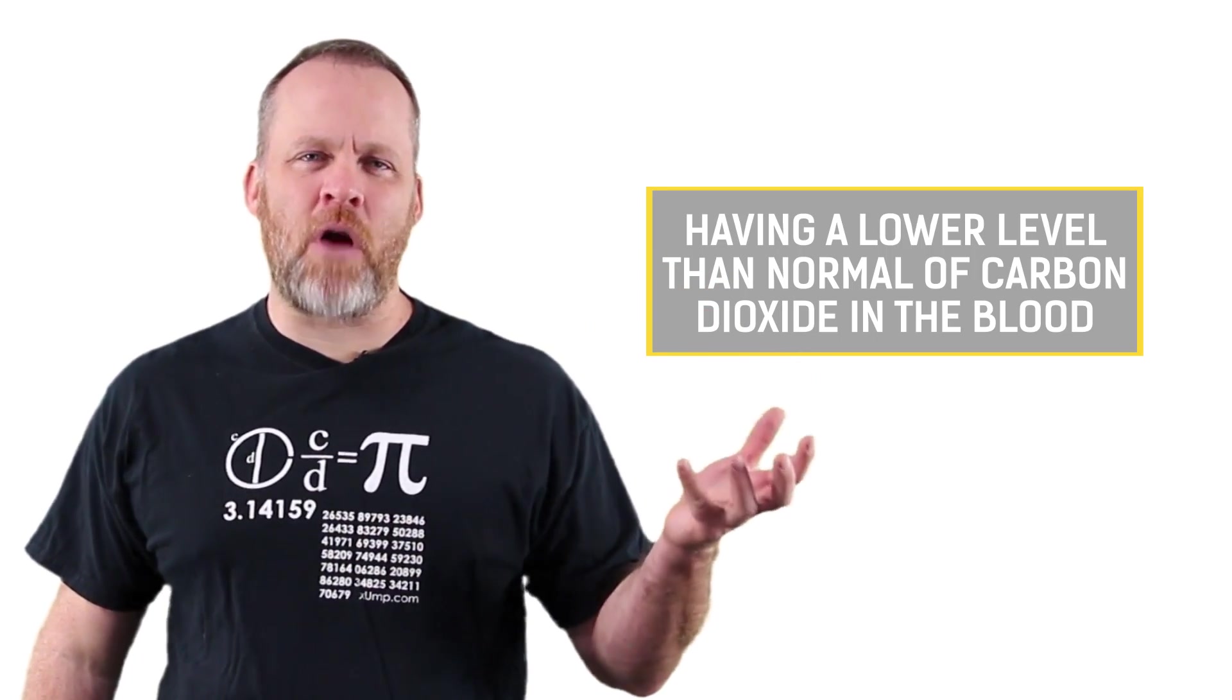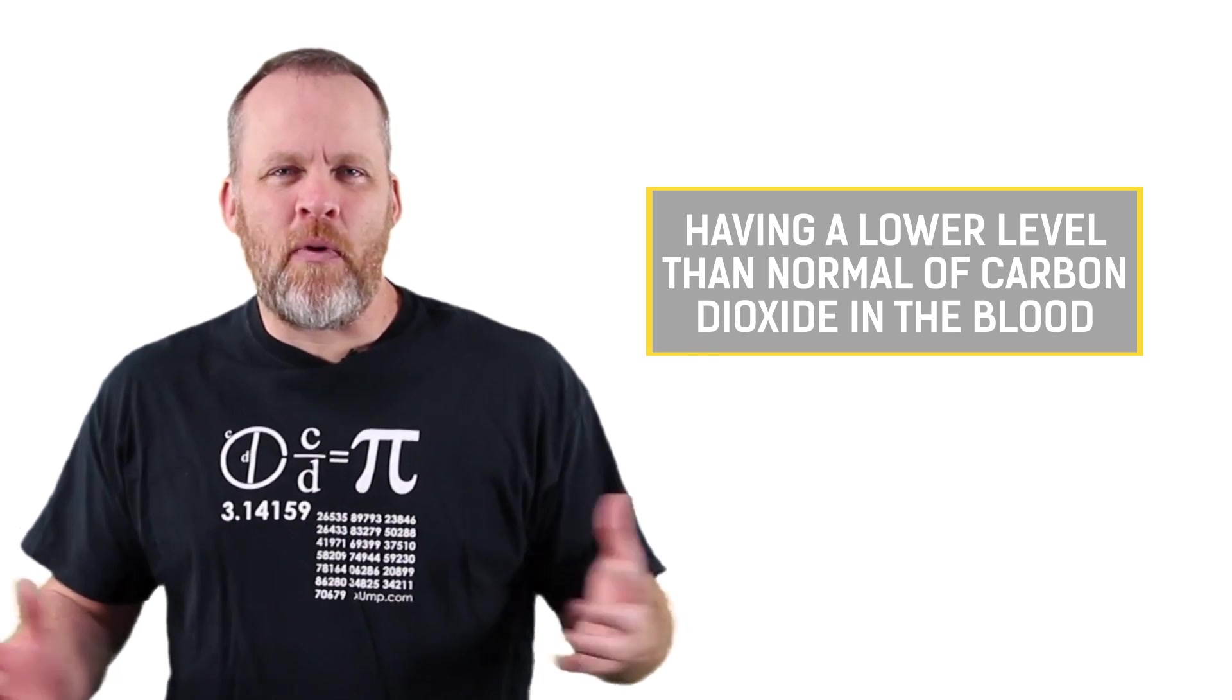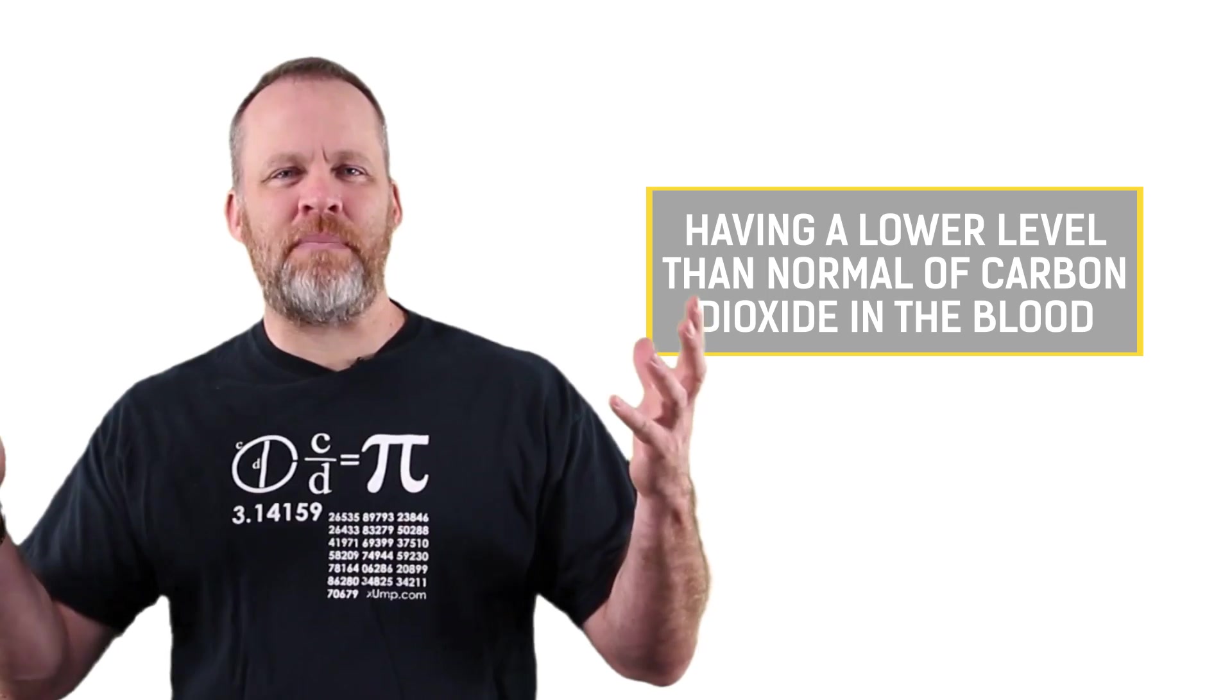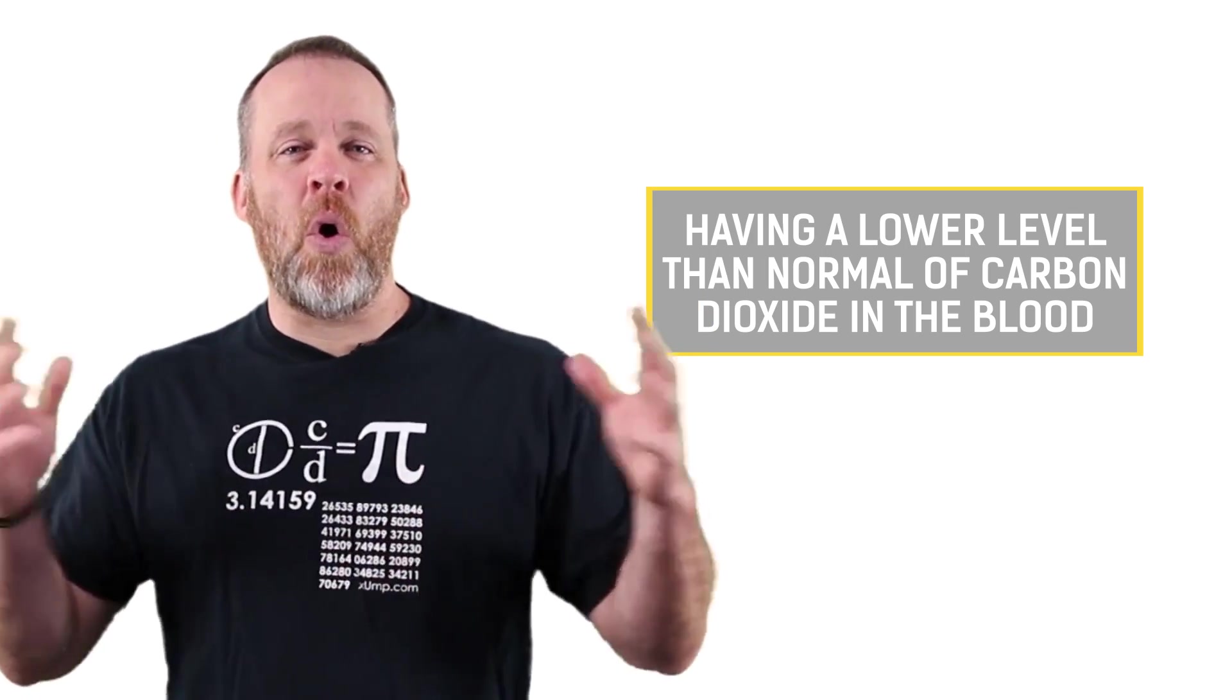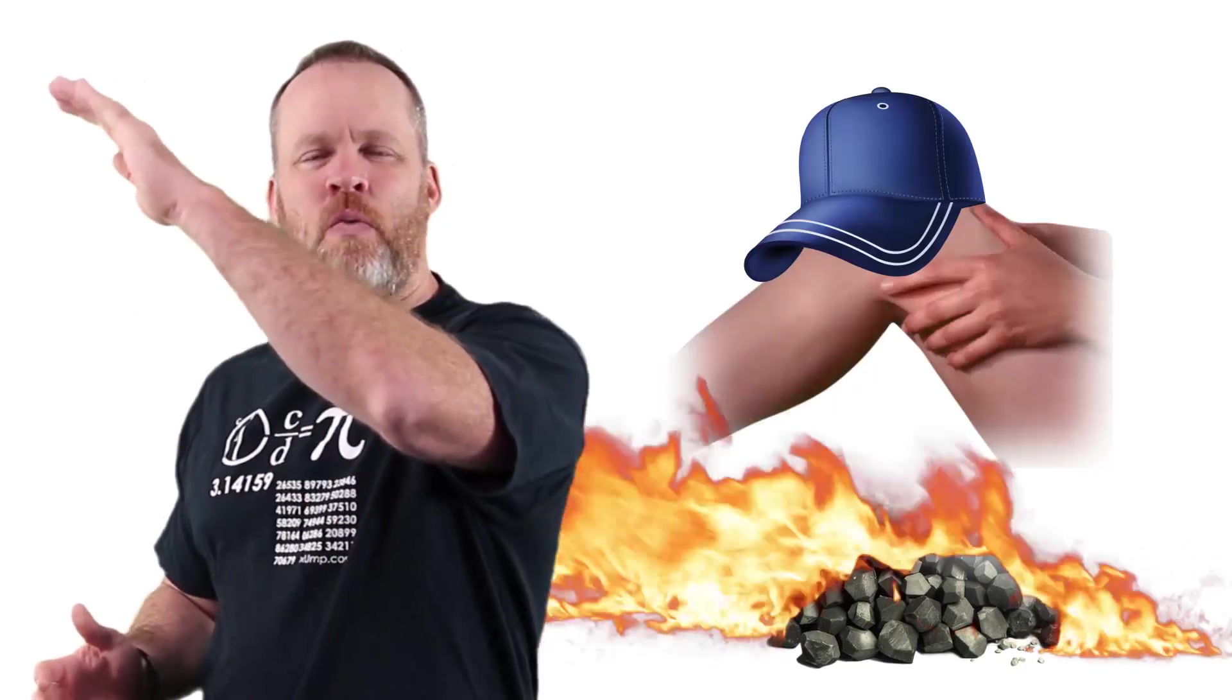Now, a lower level of carbon dioxide in the blood - we need to turn that into a picture. Well, people often think of carbon dioxide being in the atmosphere by coal or gasoline burning. So I want you to see coal or gasoline and it's burning. And on top of that, we put the baseball cap with the knee.